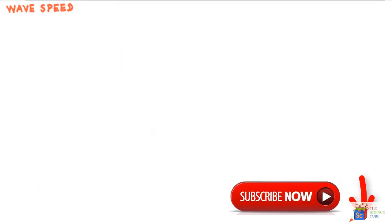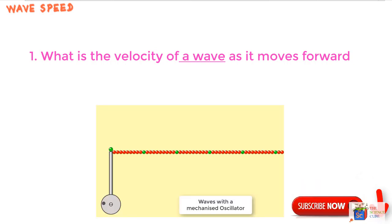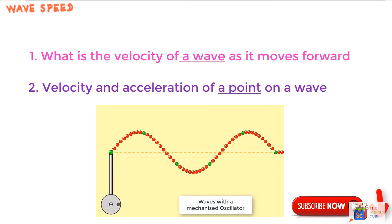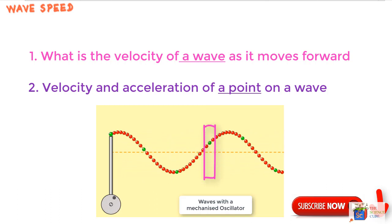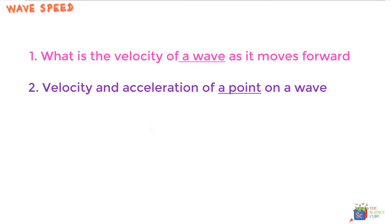Great to have you back in the fourth lesson on waves. What you'll learn is: one, what is the velocity of a wave as it moves forward, and two, what is the velocity and acceleration of a point on a wave in a direction perpendicular to the motion of the wave at different times. I think this lesson is going to be a lot easier than what you've learned in waves so far, which by the way was not easy stuff — so you can pat yourself on the back.